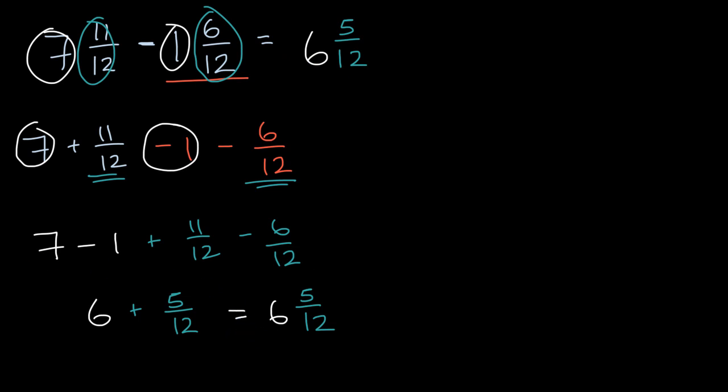Another way that you might see this approached is, you could rewrite this as seven and 11 twelfths minus one and six twelfths. Let me do the six twelfths in that blue color that I'm using for the fraction parts. And then I would first focus on the fractional parts and I'd say 11 twelfths minus six twelfths is five twelfths. And seven minus one is six and I got six and five twelfths.